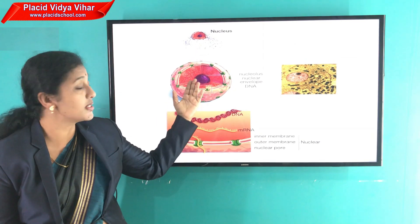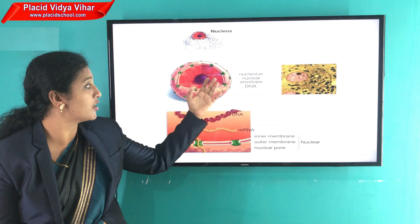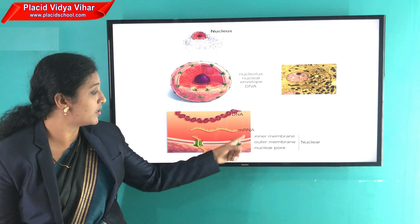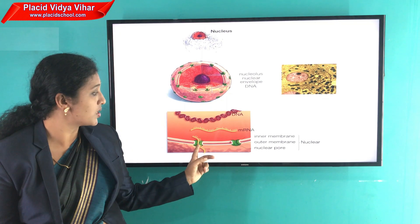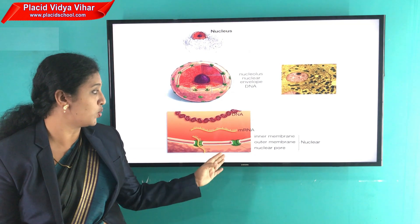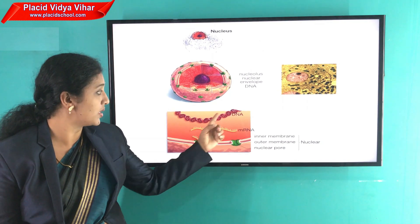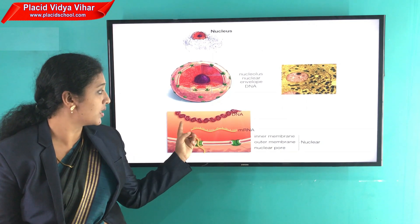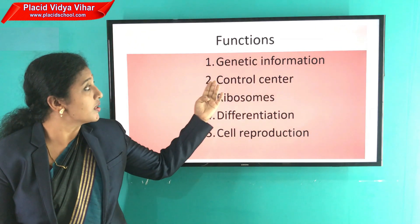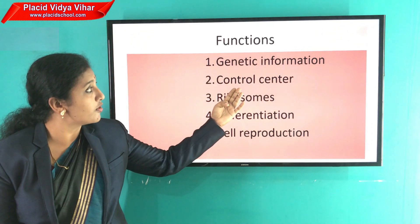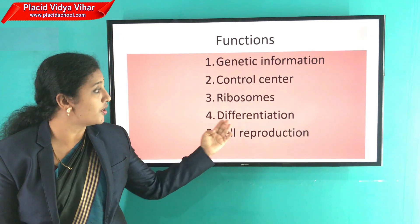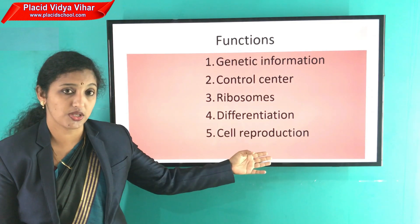This portion of the nucleus shows the movement of molecules in and out through the nuclear pore. You can also see the double helix DNA structure here. The functions of the nucleus are: genetic information, control center, ribosome production, differentiation, and cell reproduction.